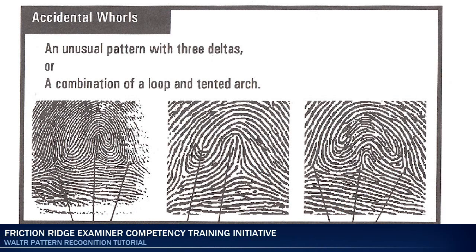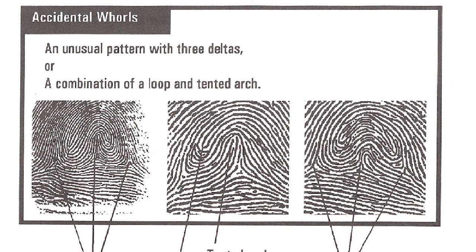The last type of whirl is the accidental whirl. These will be very easy to recognize because they don't look like anything — they don't look like the loop or the arch or the tented arch, and there is so much going on with them. This is an example of an accidental whirl. You'll notice there are three delta formations here. Along with that is a looping ridge here, and it's making a double loop, coming up here. So it's not a double loop whirl — it is definitely an accidental whirl.